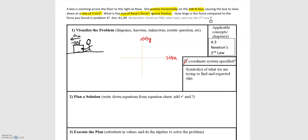Now that we have an idea of what's going on, the next step is to choose what our object or system is for this problem. We know we are looking for the force applied by Rosa, and we know the box is accelerating as a result of this force. Since this force is being applied to the box, the box is going to be our object of interest — our system.